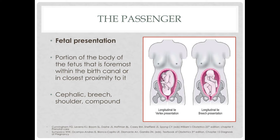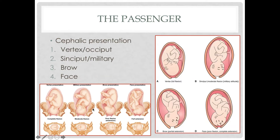Next is fetal presentation — the portion of the body of the fetus that is foremost within the birth canal or in closest proximity to it. Presentation could be cephalic, breech, shoulder, or compound. For the cephalic presentation, we have four subtypes: the vertex or occiput presentation, the sinciput or military presentation, the brow presentation, and the face presentation.